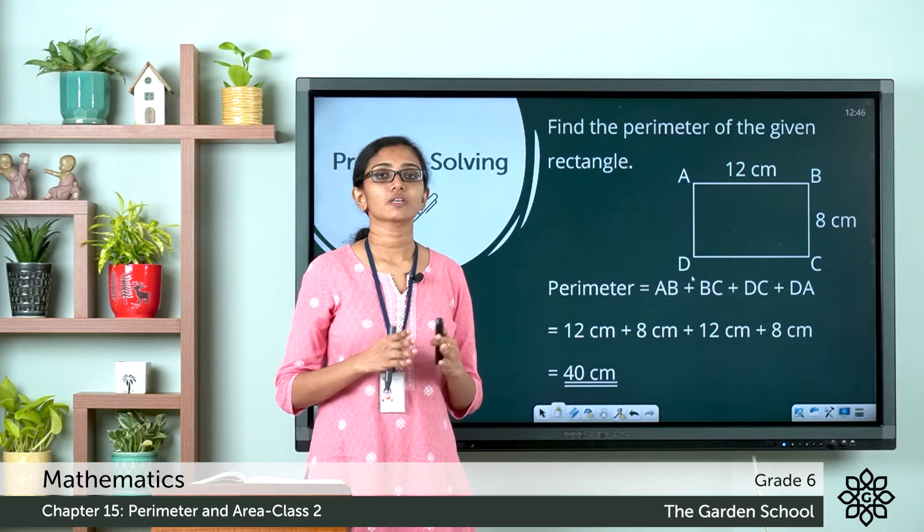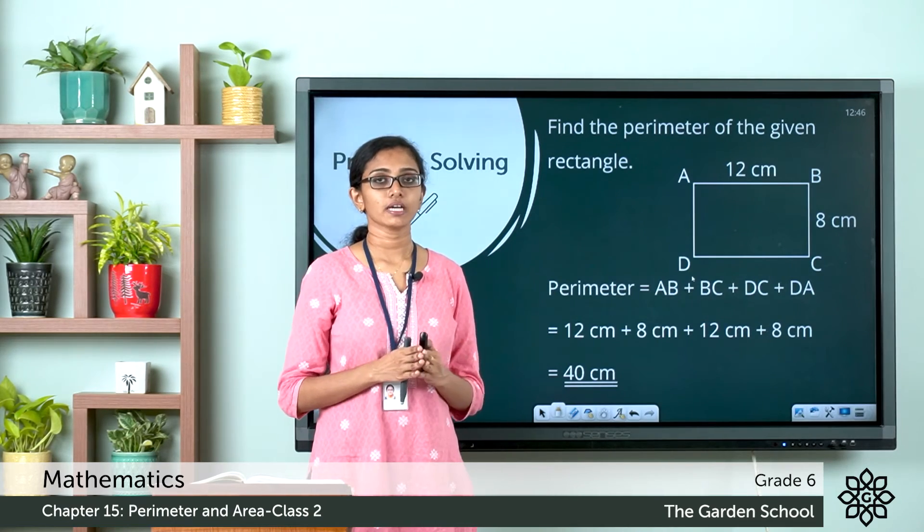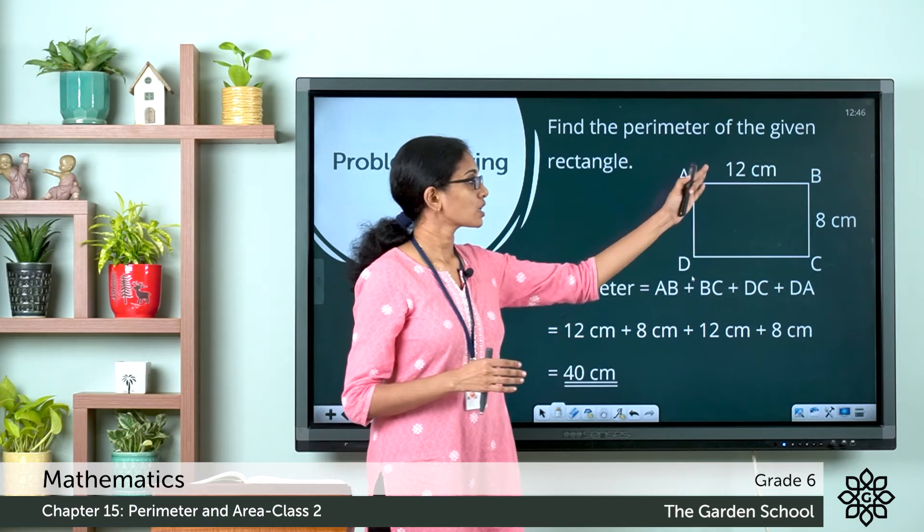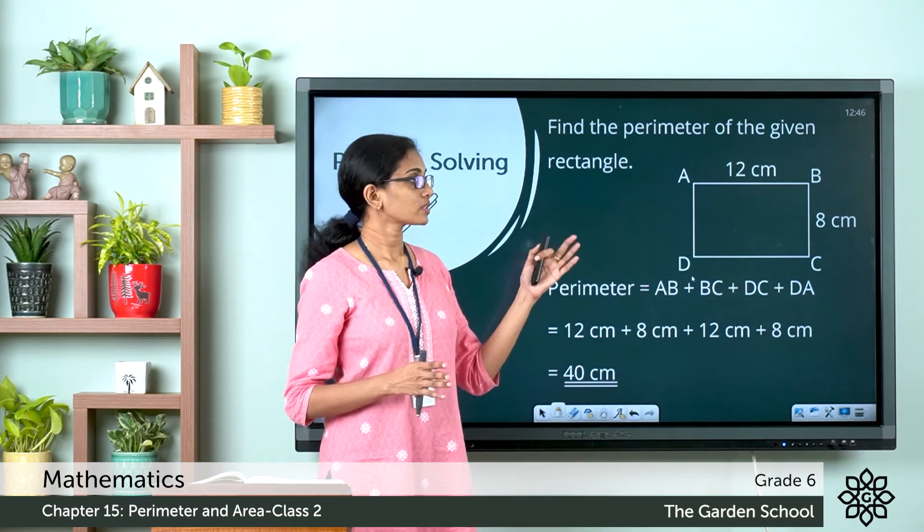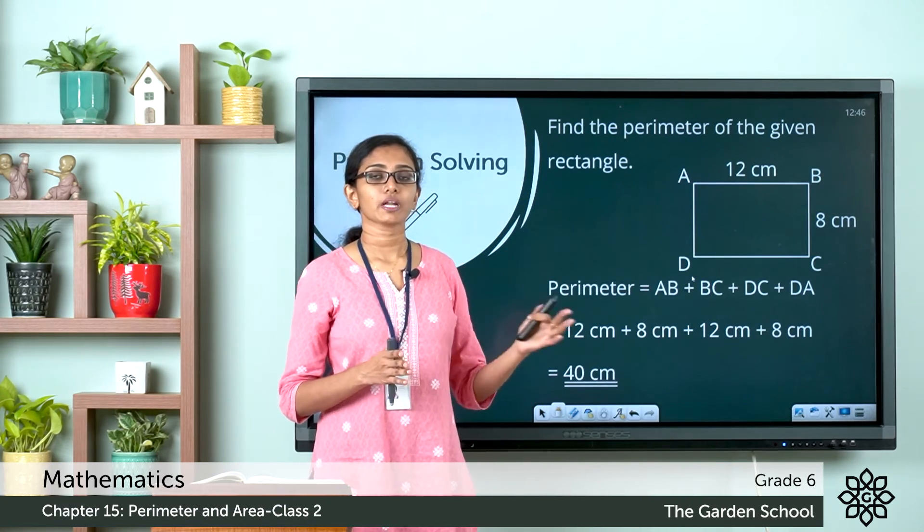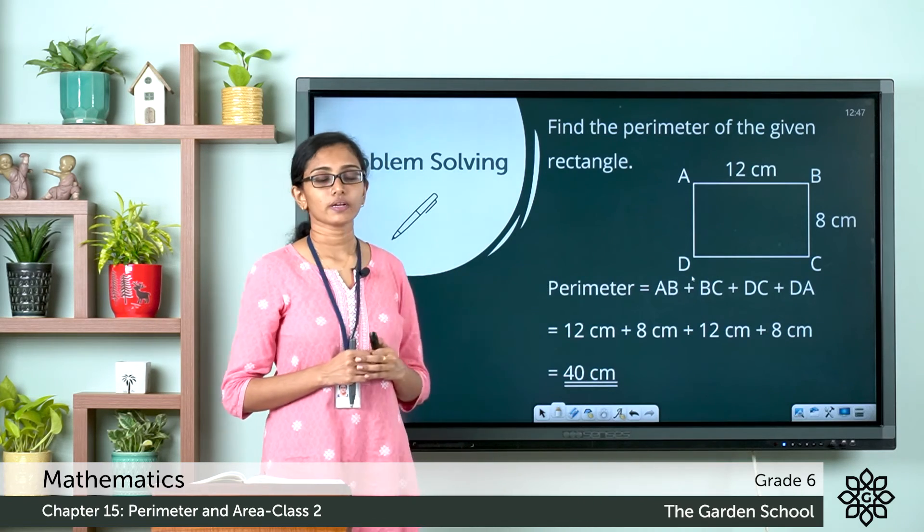Now if you substitute the dimensions in the formula for finding the perimeter, it would be equal to 2 times 12 plus 8. 12 plus 8 is 20, 2 times 20 is 40. So the perimeter is equal to 40 centimeter.